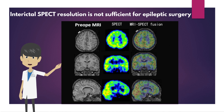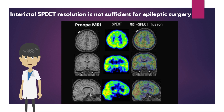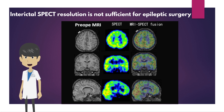Brain perfusion SPECT of the same patient during the interictal phase shows a slight decrease in perfusion around the small cystic lesion on MRI, but less clear than PET due to the low spatial resolution.